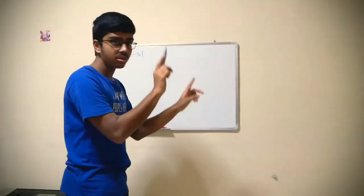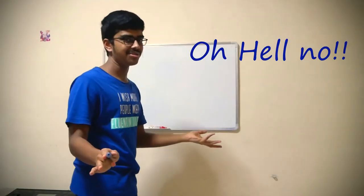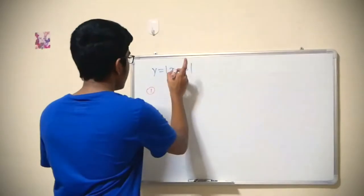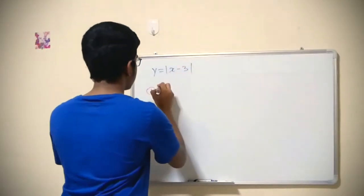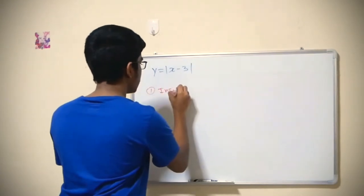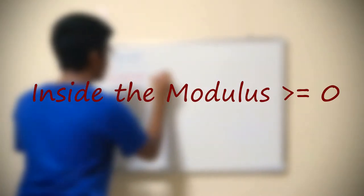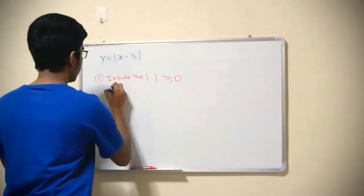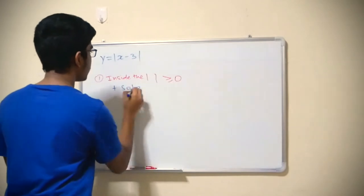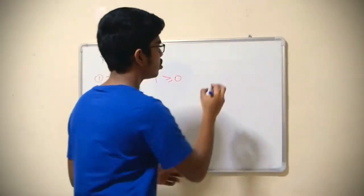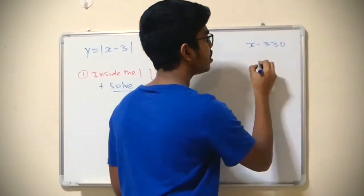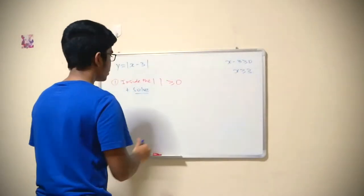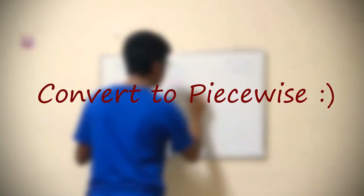Let's understand this. The first step is to make the part inside the modulus greater than or equal to zero and solve for it. So if you solve x minus 3 is greater than or equal to 0, you get x greater than or equal to 3.